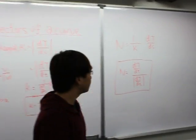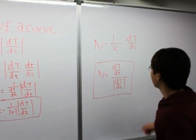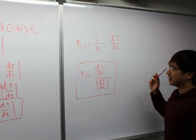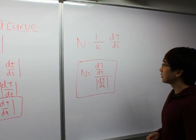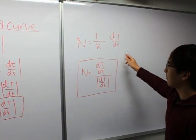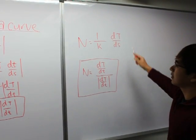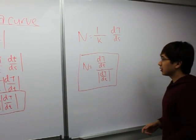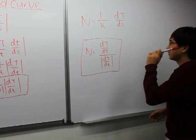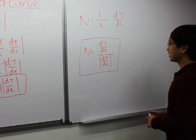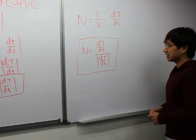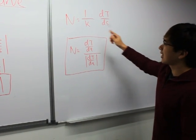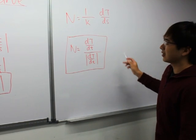Moving on to the equation. The differentiation of T in terms of s is 90 degrees to the tangent. So by dividing it by kappa, we can obtain the unit normal vector. And by simplifying the equation, which is equal to the differentiation of the tangent in terms of t divided by its magnitude, we do not have to go through the hassle of finding the arc length and kappa — we can directly find the normal just like this.